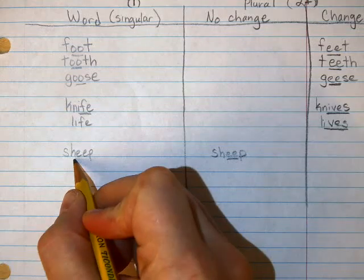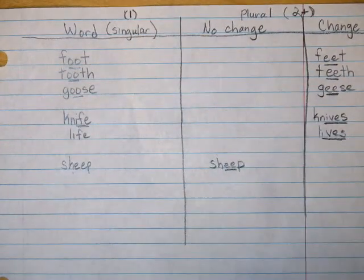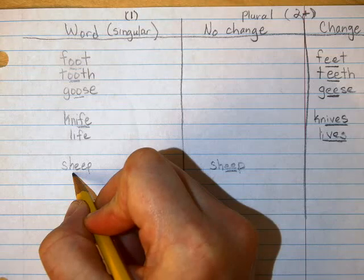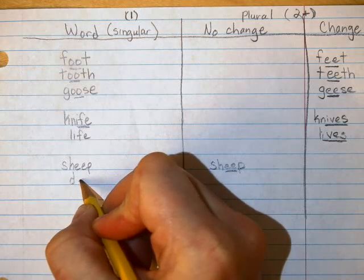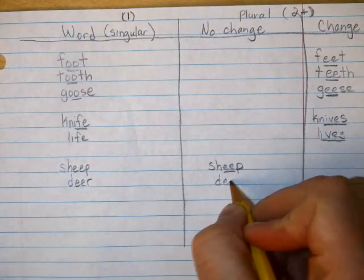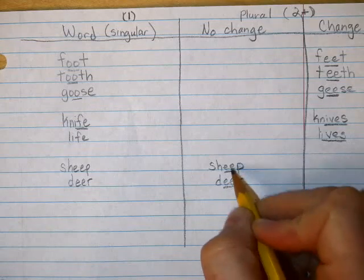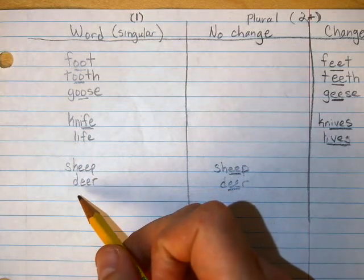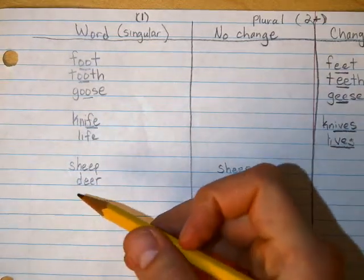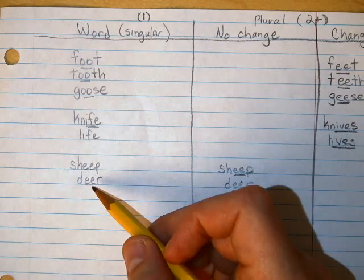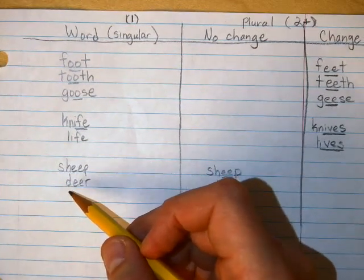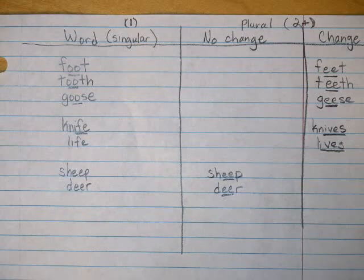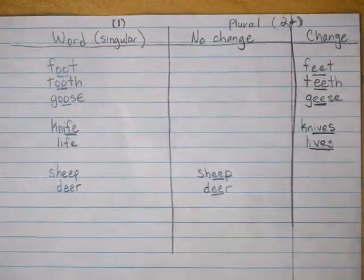We'll do one more just for fun. How about deer? One deer or 25 — what? One deer or 25 of these. Deer — doesn't change. These fit this double E pattern here. If it wasn't deer, it would be door, right? And that would get confusing. So we have deer with E's — otherwise you'd see some doors out in the field, and that'd be kind of strange. It's deer, and it just stays deer whether you have just one or you have 101. So that's a review of today's spelling lesson for this week.